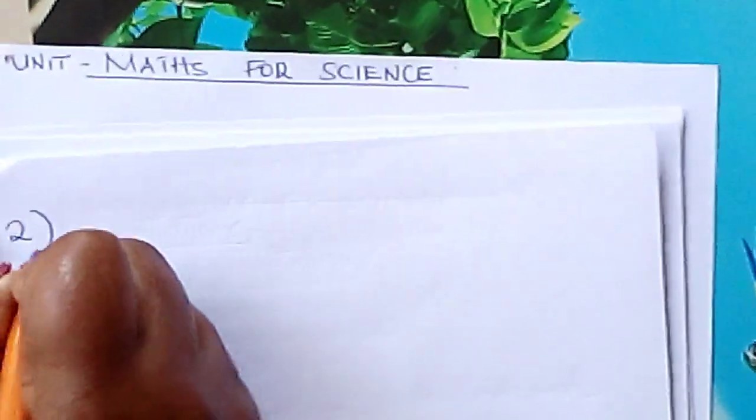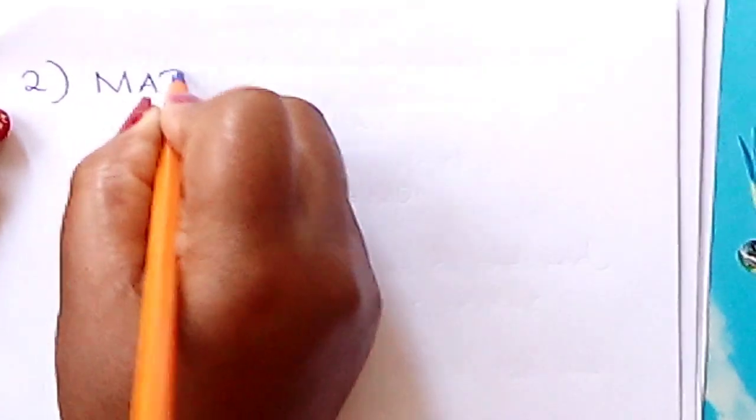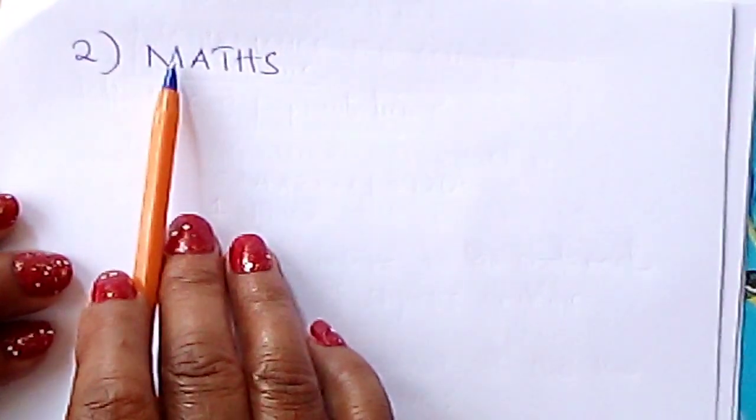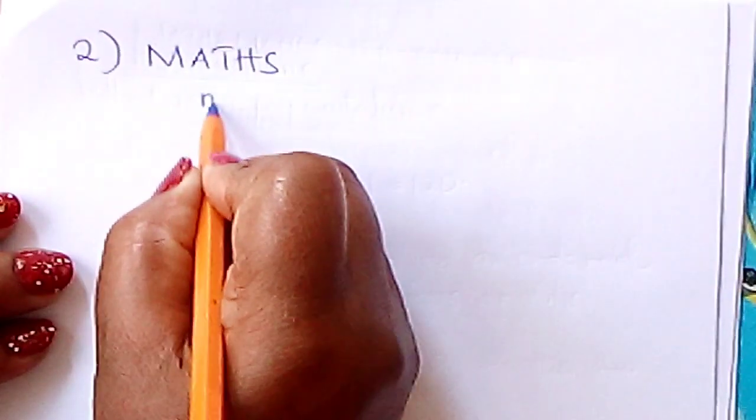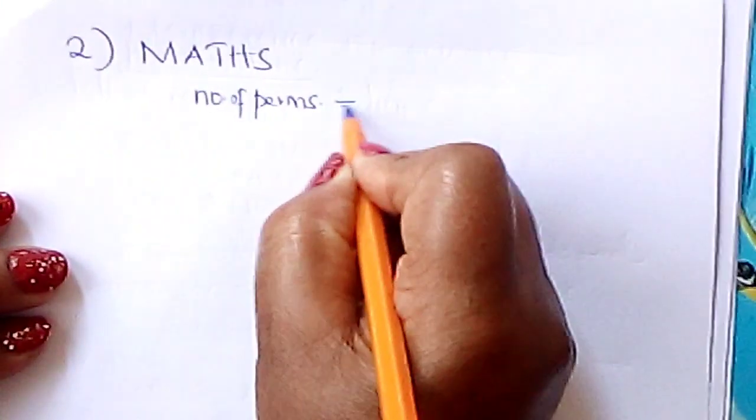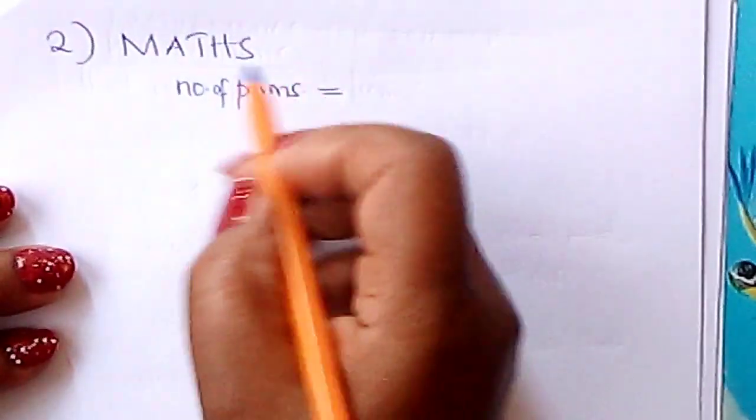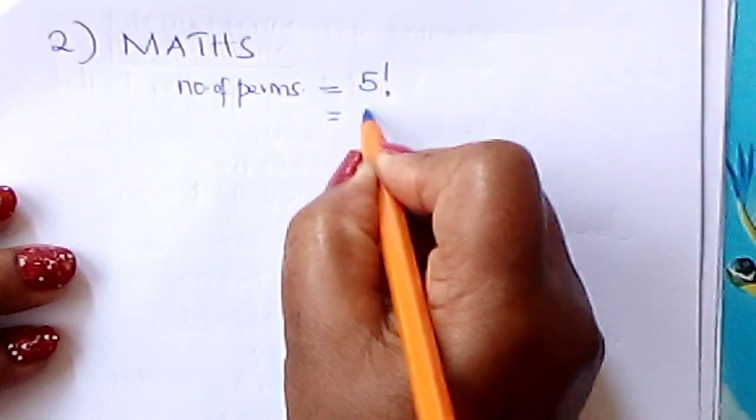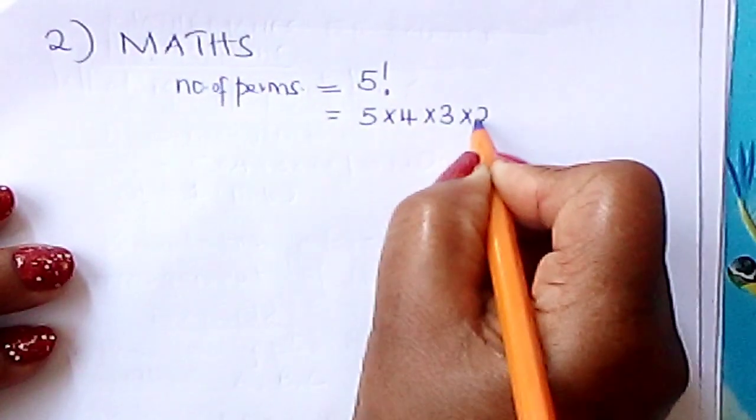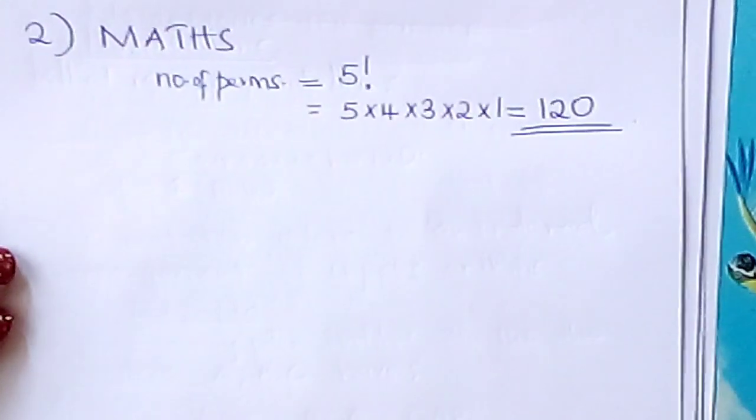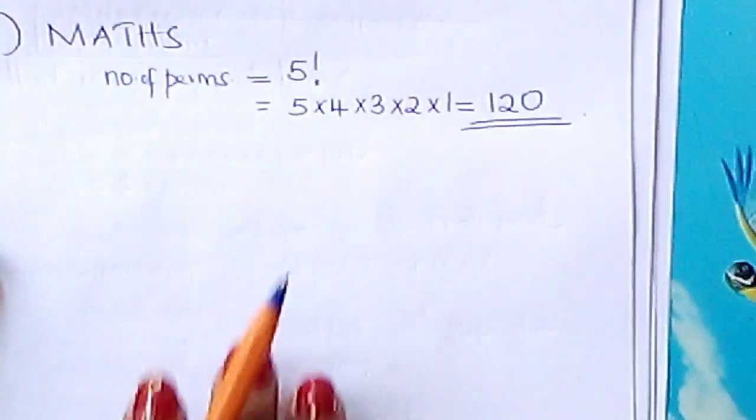Number 2. Suppose we have the word MATHS. How many different objects are here? There are 5. 1, 2, 3, 4, 5. Therefore, in this case, the number of permutations, the number of arrangements of these letters would be 5 factorial. 5 factorial is 5 times 4 times 3 times 2 times 1, which gives you 120 arrangements. Believe it or not, these are the arrangements that you get for these letters.